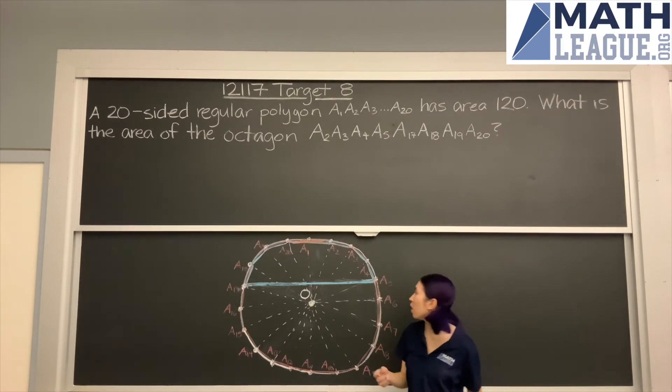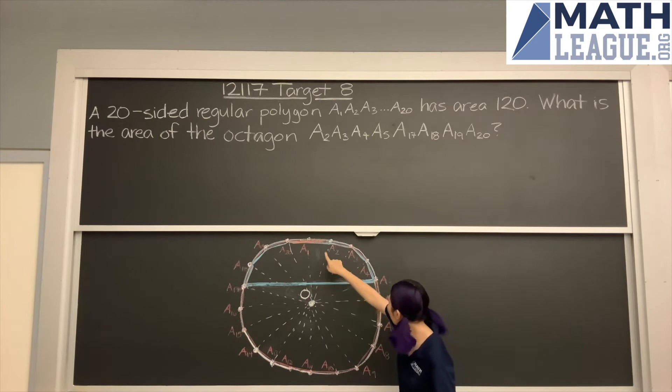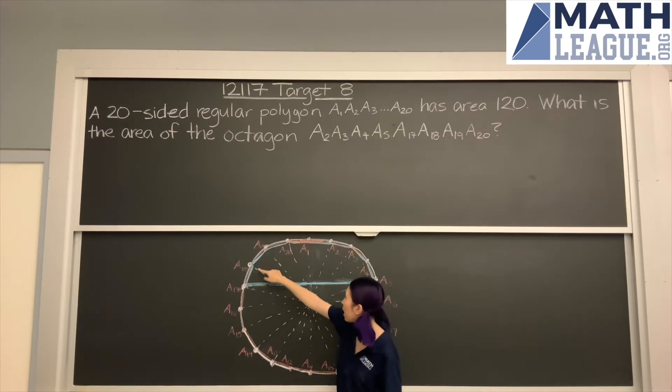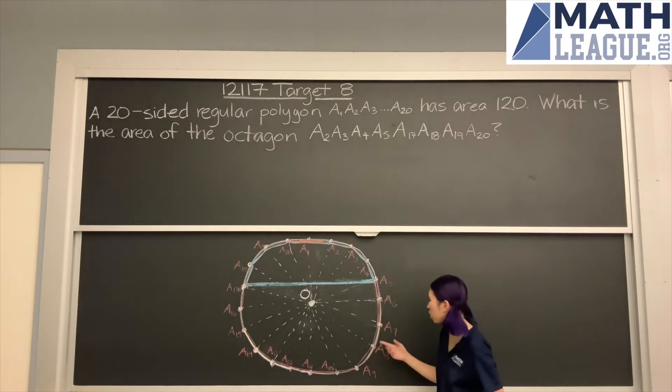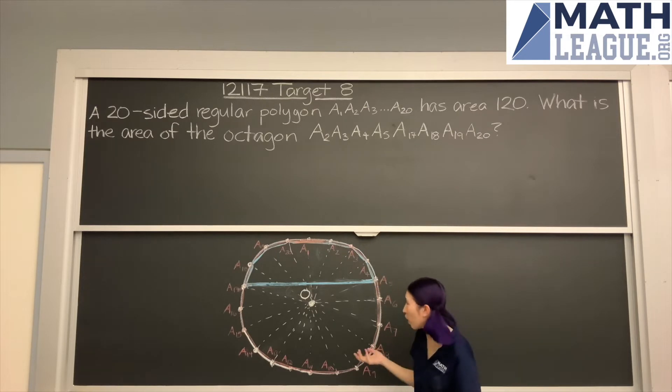So we have our octagon that we want to find the area of, A2, A3, A4, A5, A17, A18, A19, A20, that's in blue. We have our whole 20-sided polygon shown in red. And what is this white thing?